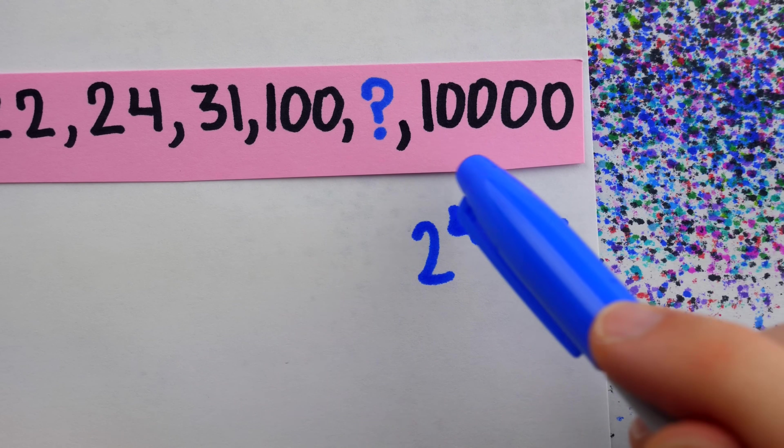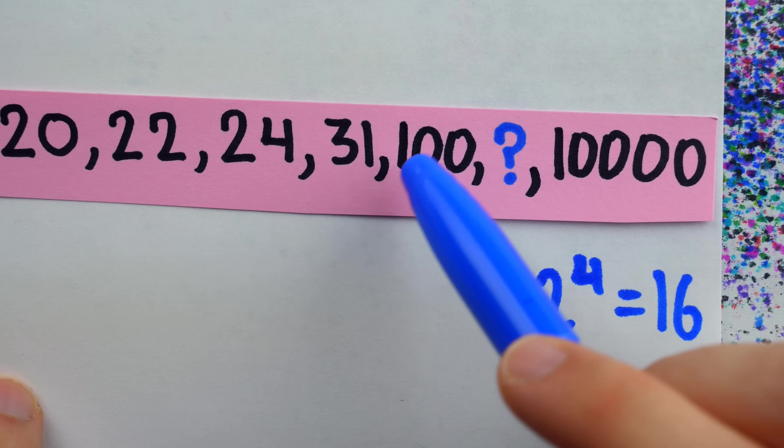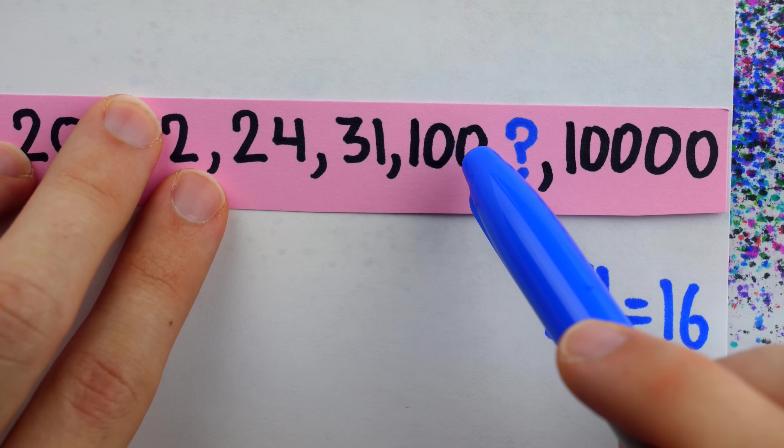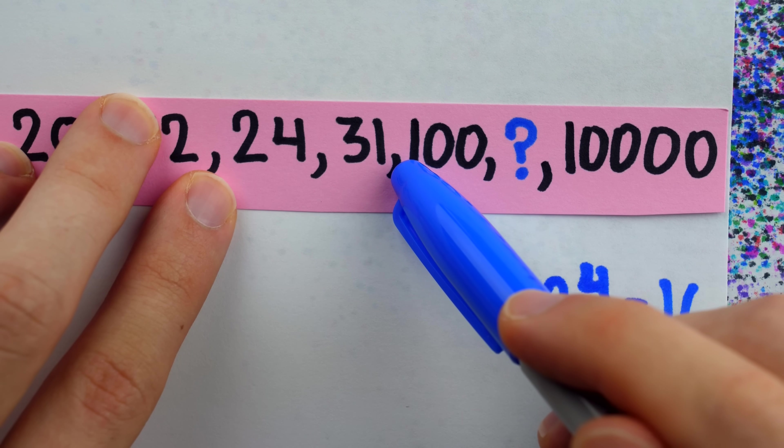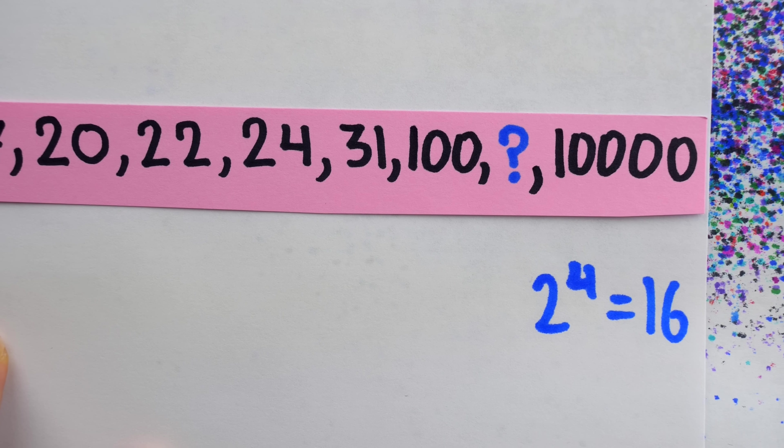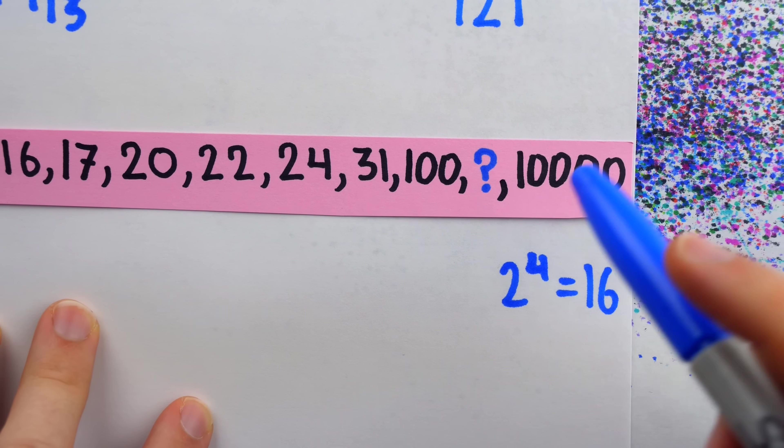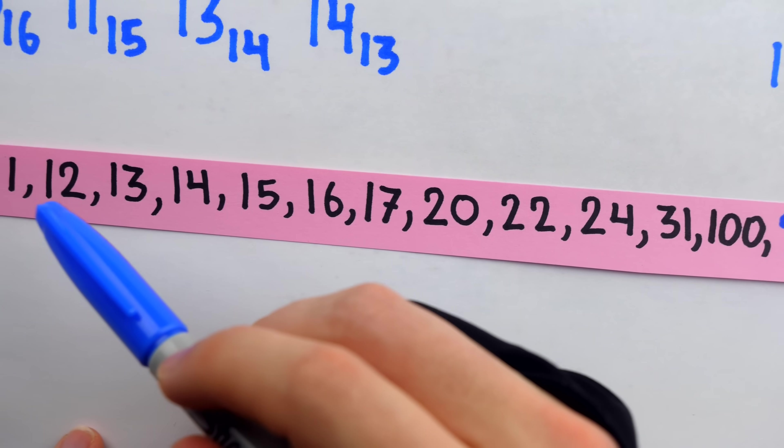If this is 16 in base 2, well, this happens to be 16 in base 4, because it's 0 copies of 1, 0 copies of 4, and 1 copy of 4 squared, which is 16. So we realize it might be that the base is increasing from right to left.